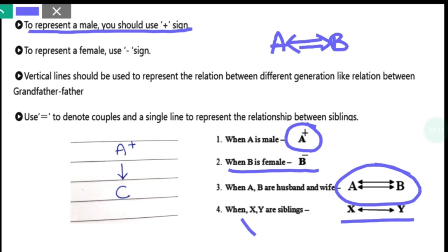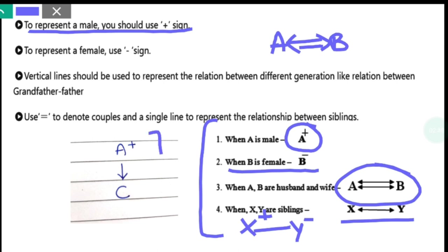Like here, they have represented them in a single line. If X is a brother, X is a plus and Y is a sister, Y is a minus. So this is the notation. If you want to make a parent and child relationship — meaning a generational difference — then you show it in a vertical line.